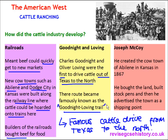The final factor we're going to look at is Joseph McCoy. Joseph McCoy created the cow town of Abilene in Kansas in 1861. He was the first person to create a cow town — he bought land, built stock pens, and then advertised the town as a shipping point. The building of cow towns like this helps to explain why the cattle industry developed.